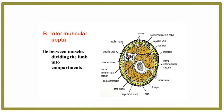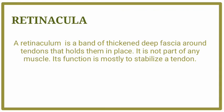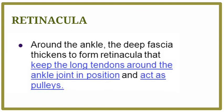Fibrous septa arise between groups of muscles and divide the muscle into compartments. In the region of joints, the deep fascia may be considerably thickened to form restraining bands called retinacula. Retinacula hold the underlying tendons, serve as a pulley with tendons, and help tendons to move.